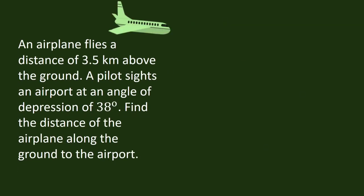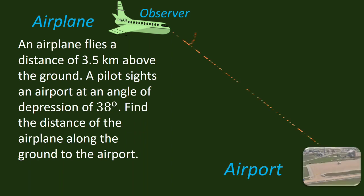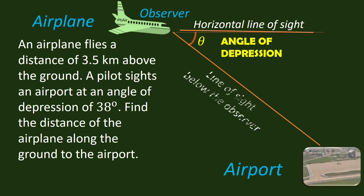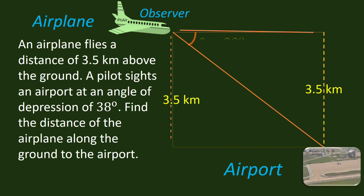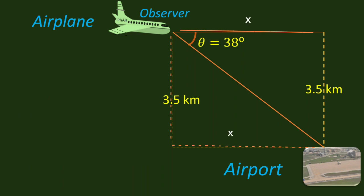Let us have another problem applying the angle of depression. An airplane flies a distance of 3.5 kilometers above the ground. A pilot sights an airport at an angle of depression of 38 degrees. Find the distance of the airplane along the ground to the airport. The pilot acts as an observer, and we form this type of angle. Angle theta is the angle of depression. The information given is 3.5 kilometers, which is the distance from the ground to the airplane, and the angle of depression is 38 degrees. We are asked to find the distance along the ground from the airplane to the airport.